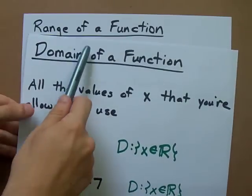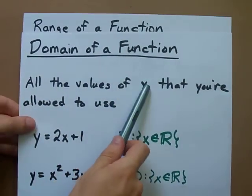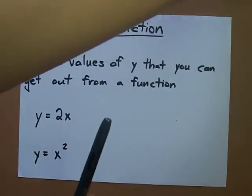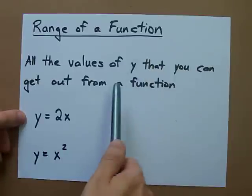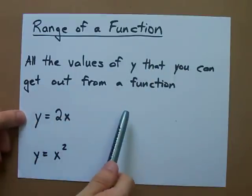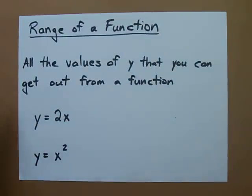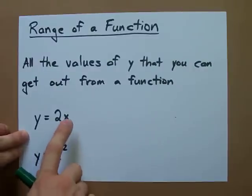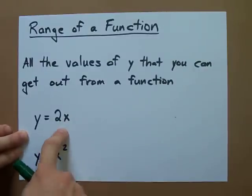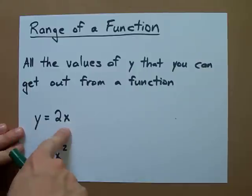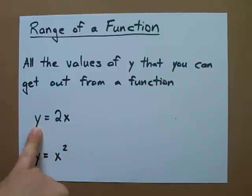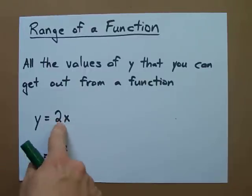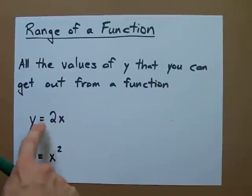Just like the domain of a function is all the values of x that you're allowed to plug in, the range of a function is all the values of y that you can get out from it. You can plug in anything you want for x — zero, negative, a billion, positive 17.6, it doesn't matter. All y does when you plug in a number for x is it doubles it; you multiply x by 2 and get your y out.